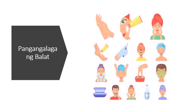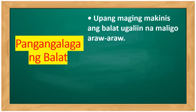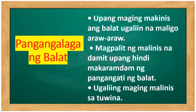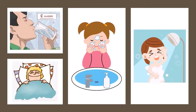Pangangalaga ng ating balat: upang maging makinis ang balat, ugaliin na maligo araw-araw. Magpalit ng malinis na damit upang hindi makaramdam ng pangangati ng balat — araw-araw magpapalit ng damit, o kaya kapag pinagpapawisan. Ugaliin maging malinis sa tuwi na. Uminom din ng tubig — walo hanggang sampung baso. Matulog din ng maaga para ang balat mo ay presko din. Kapag hindi pagod ang ating katawan at nakakatulog ka ng maayos, ang ating balat ay maganda rin.